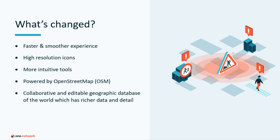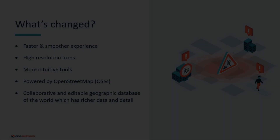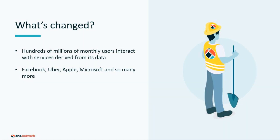The One Network map will now be powered by OpenStreetMap, a collaborative and editable geographic database of the world which has richer data and detail. Hundreds of millions of monthly users interact with services derived from its data, from the UN to the British Red Cross to Facebook, Apple, Microsoft, Amazon Logistics and Uber.